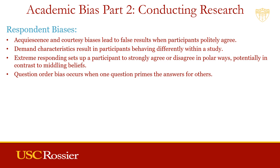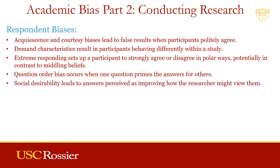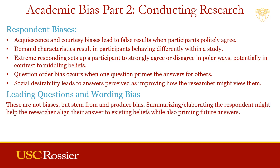Question order bias influences a participant to answer as they feel the researcher wants them to instead of honestly. As a tip, use easy early questions to help open up the participant to answer freely and honestly. Similar to the others, social desirability results in participants answering in ways that they think will improve how the researcher views them. Leading questions and wording bias are similar to question order bias. These might not be biases on their own, but they connect with and influence bias. For example, how you summarize and elaborate what a participant says during an interview might alter the study because you could be indicating how you expect their future answers to align with your expectations, priming the following responses.